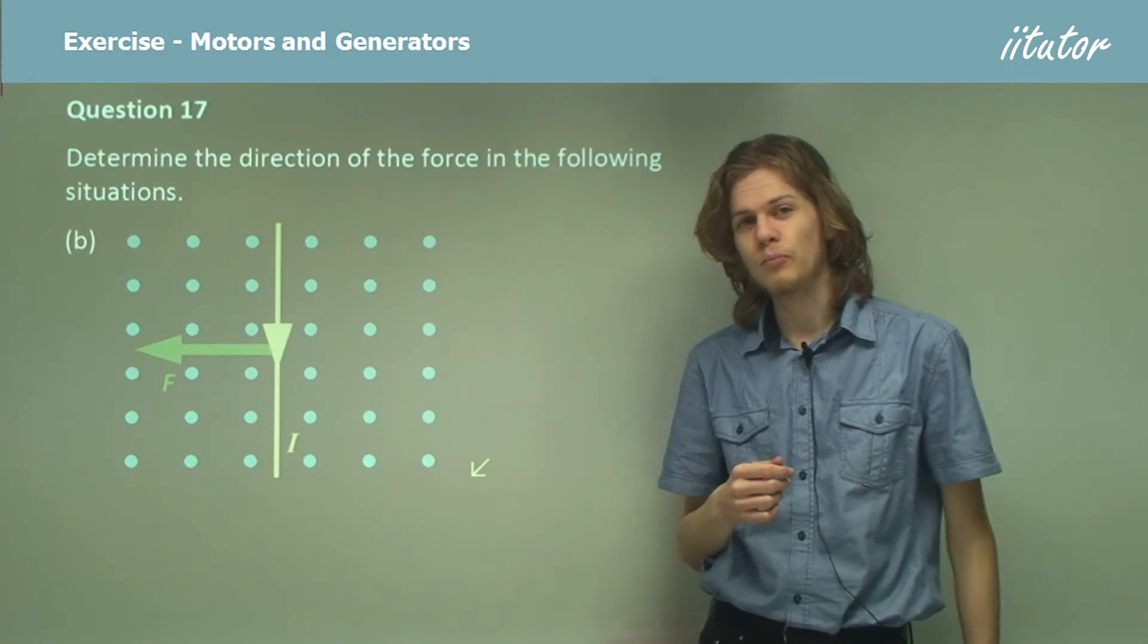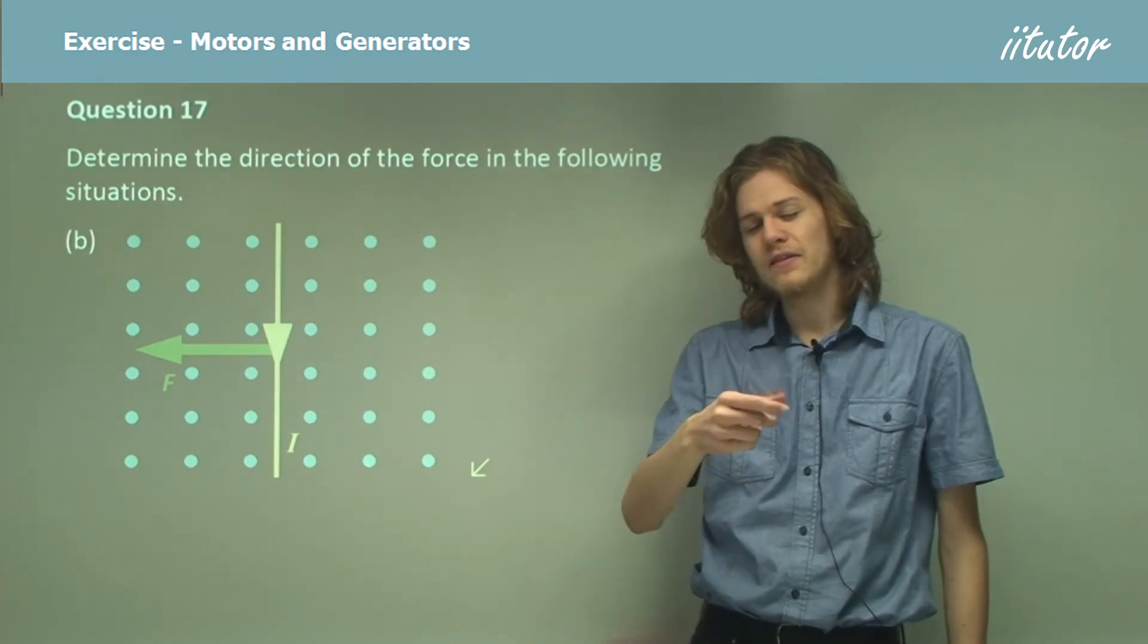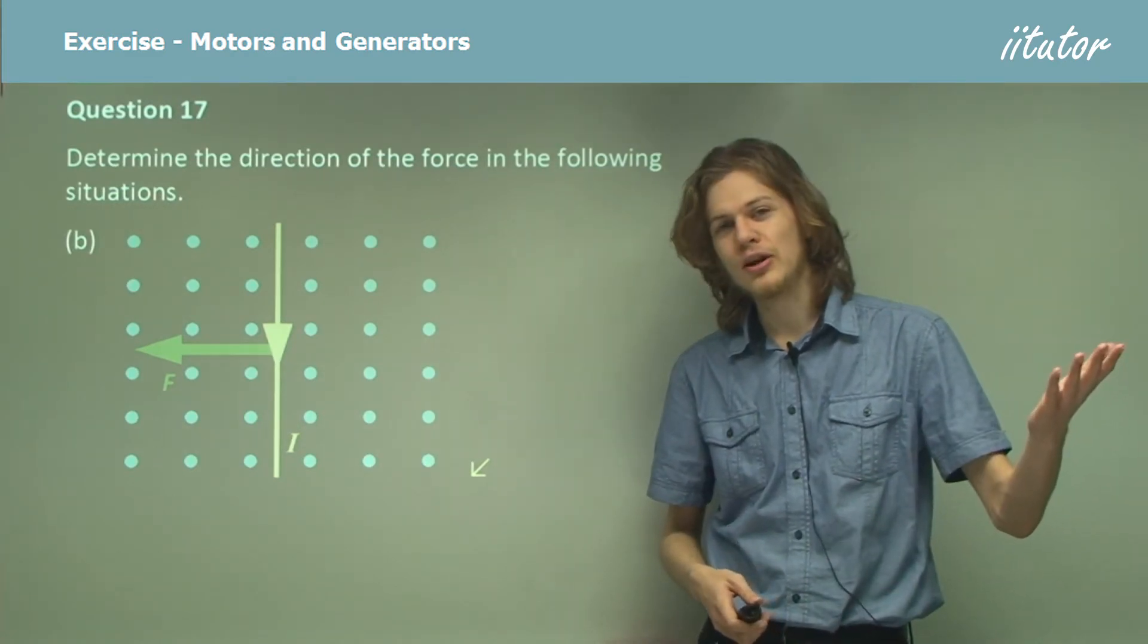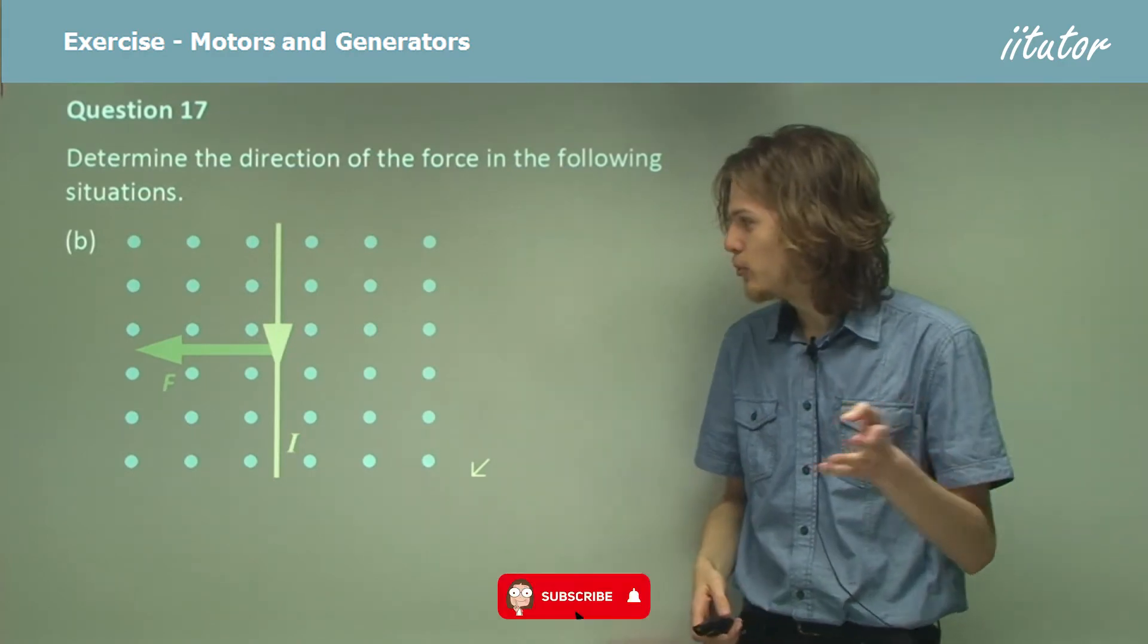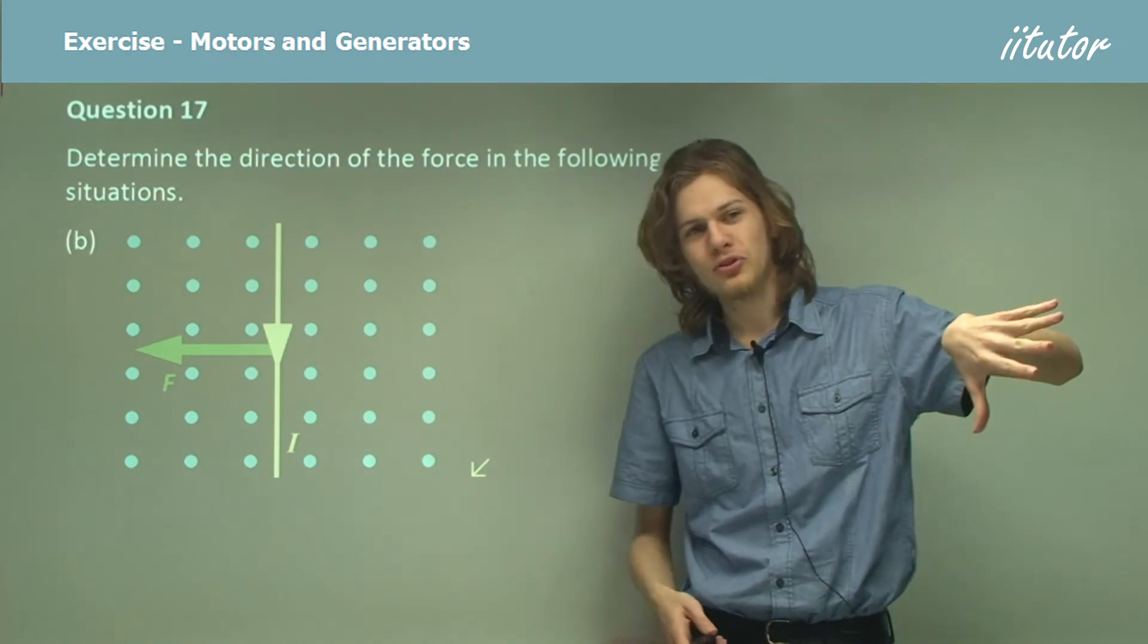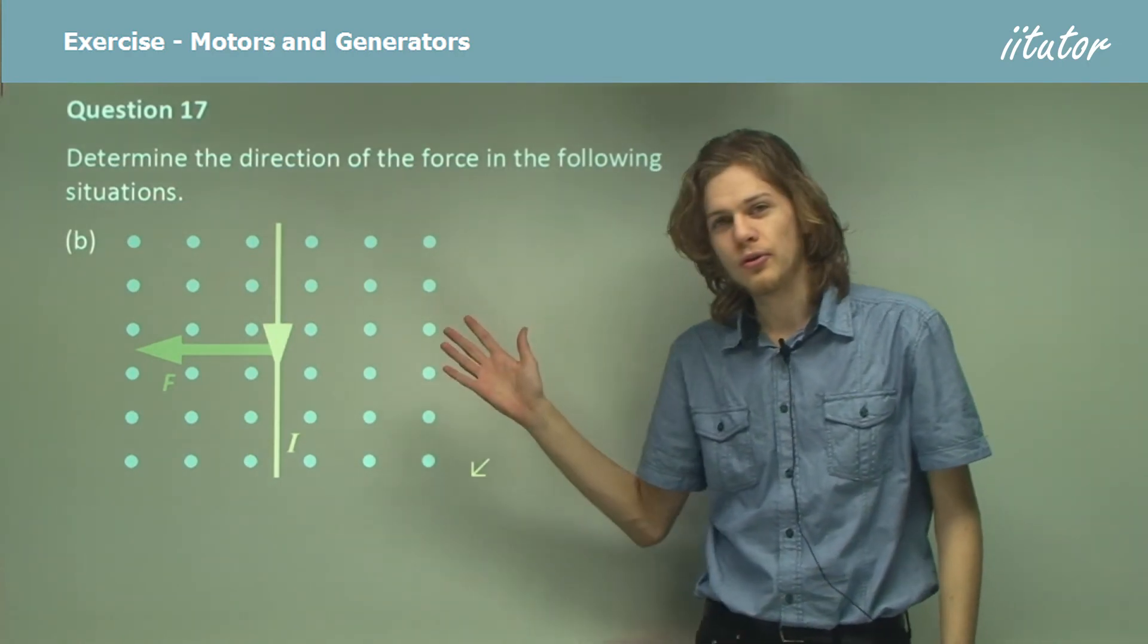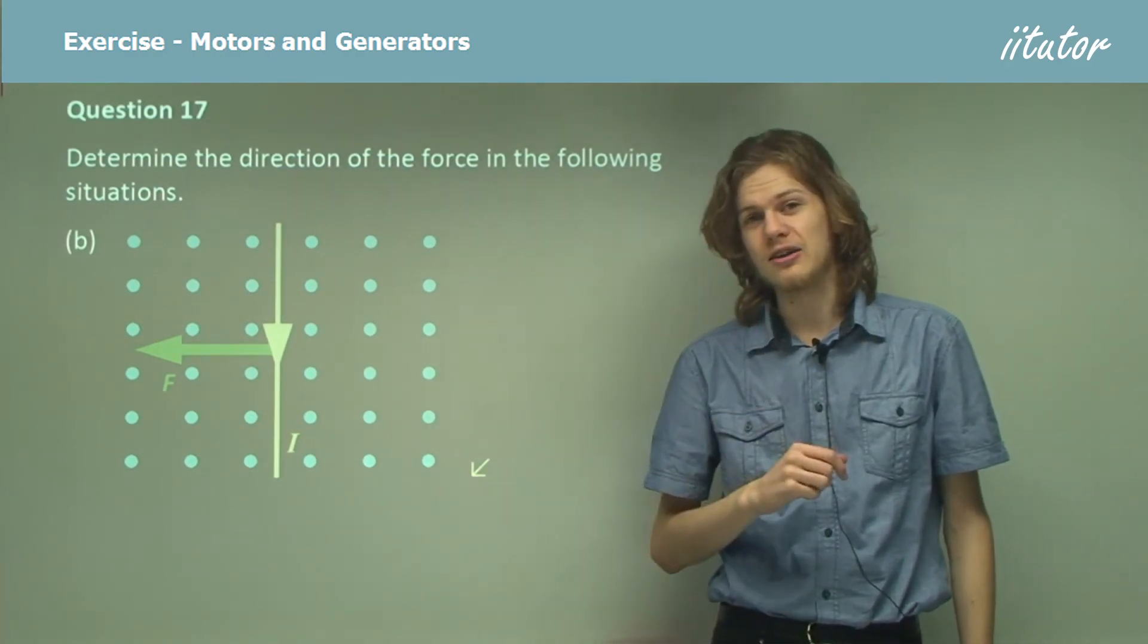Don't forget the right hand palm rule. A common mistake that lots of people make is they're writing down the answer with their right hand, and so they use their left hand to figure out the direction of the force. But this won't produce the correct answer, because if I put my left hand like that, my thumb down, then the force will be in the opposite direction. So if you're trying to figure out the direction of the force on a current or on a moving particle, make sure you put down your pen and use your right hand.